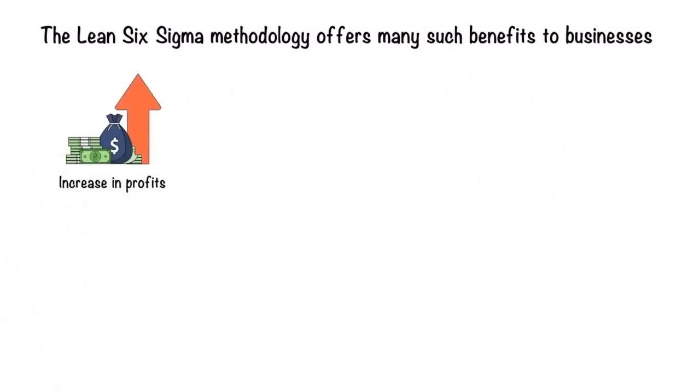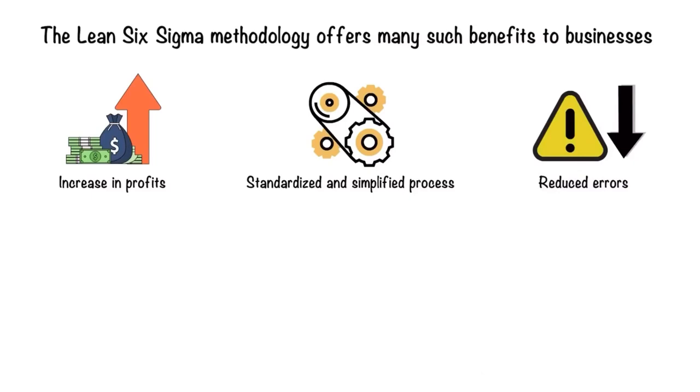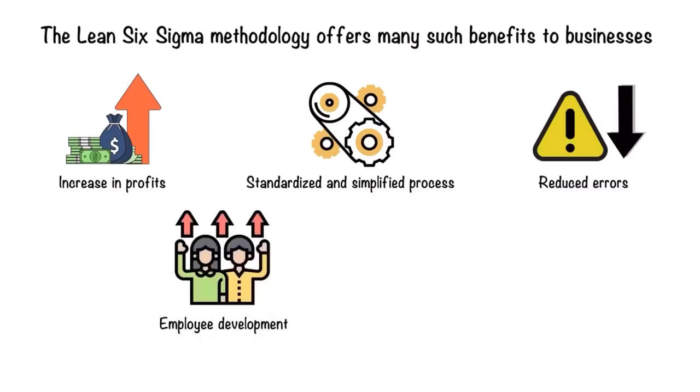First, increase in profits. Second, standardized and simplified process. Third, reduced errors. Fourth, employee development. Fifth, value to customers. And that is Lean Six Sigma.